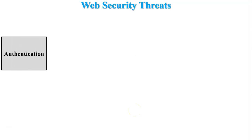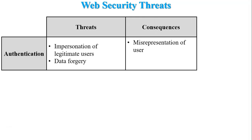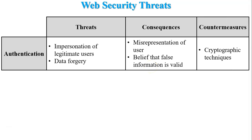Authentication is a process to verify a user's identity. Threats include impersonation of legitimate users — where fake websites or users act as real ones, a form of phishing attack — and data forgery, where a fake user sends links to obtain user information. Consequences are misrepresentation of users and belief that false information is valid. To achieve authentication, cryptographic techniques include hash functions, message authentication codes, digital signatures and digital certificates.